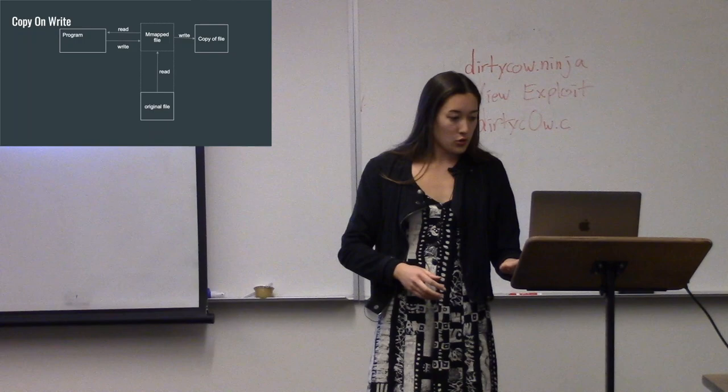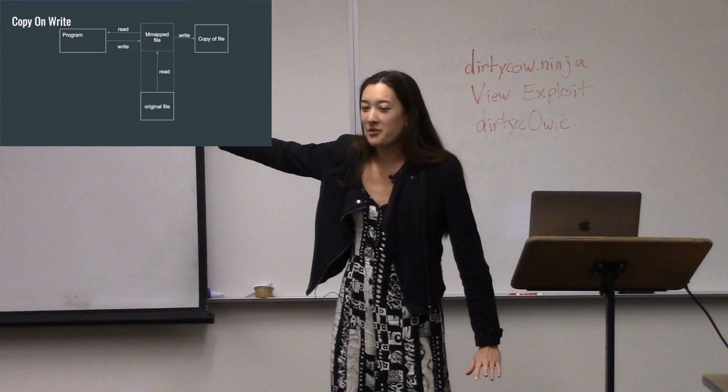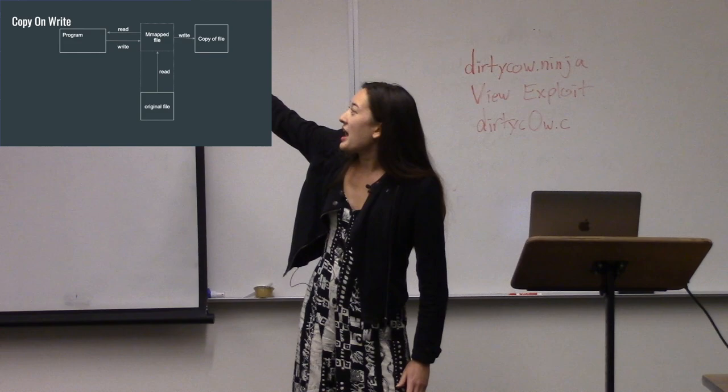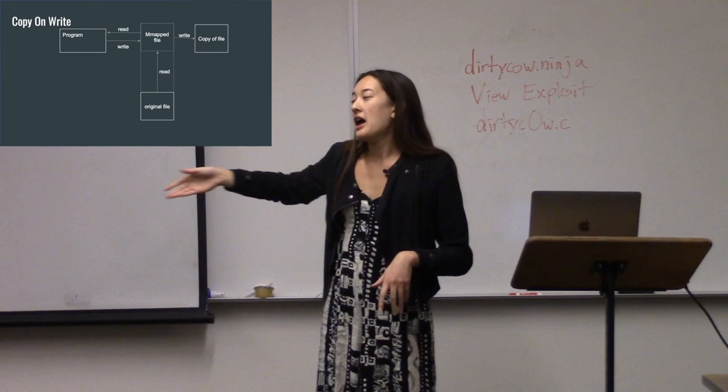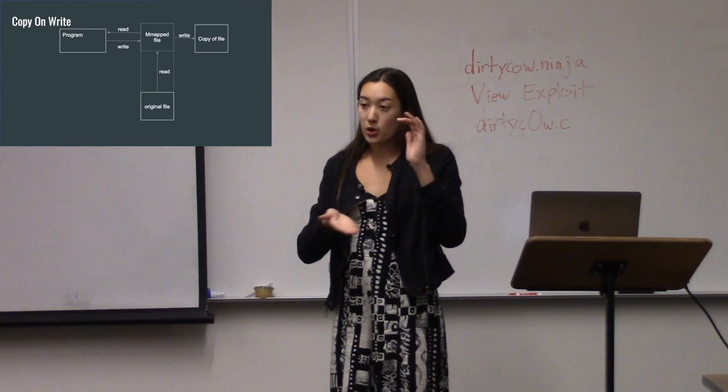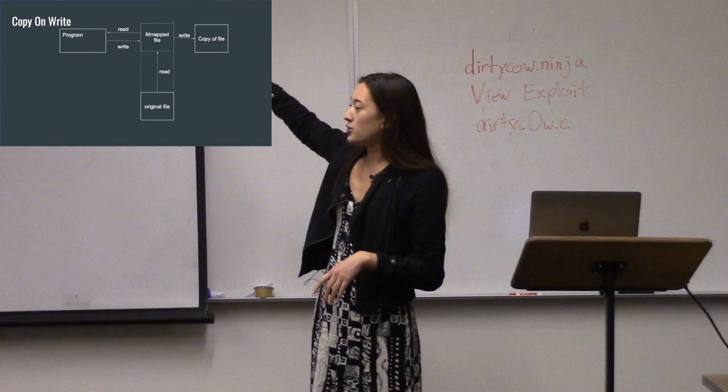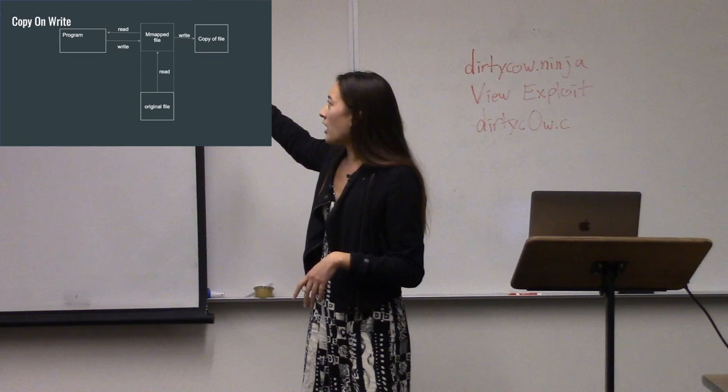Here's a diagram to help understand copy-on-write. You have your program, and if it just wants to read, it calls read from that mmapped memory segment. The kernel will just read from the original file. But if you call write, it takes the original file, copies the code section you want to write to, copies that into your mmapped file, and changes whatever you want there. So you're making a copy of the file inside that memory-mapped segment when you want to write to it.